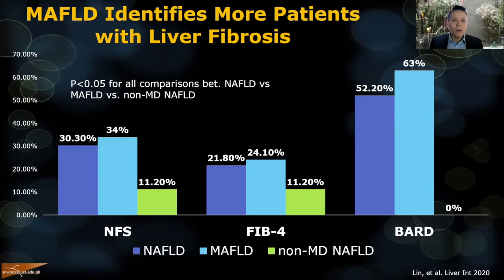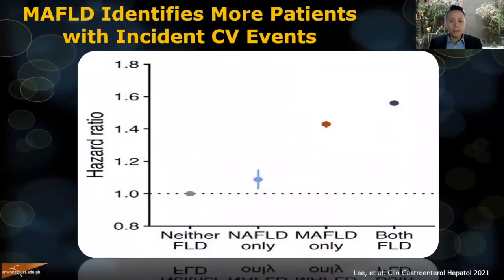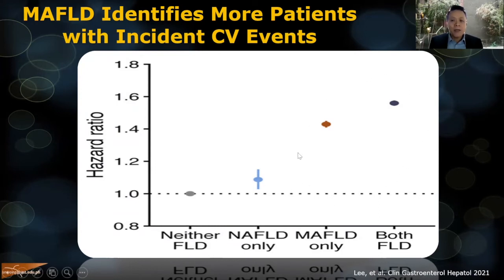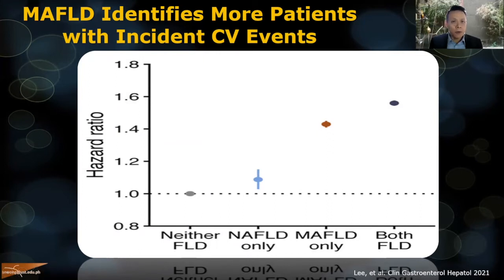Another study looked at cardiovascular events. Using MAFLD criteria gives a greater chance of predicting incident cardiovascular events compared to NAFLD criteria. But even patients who only meet NAFLD criteria still have a small risk of developing incident cardiovascular events over the control group.